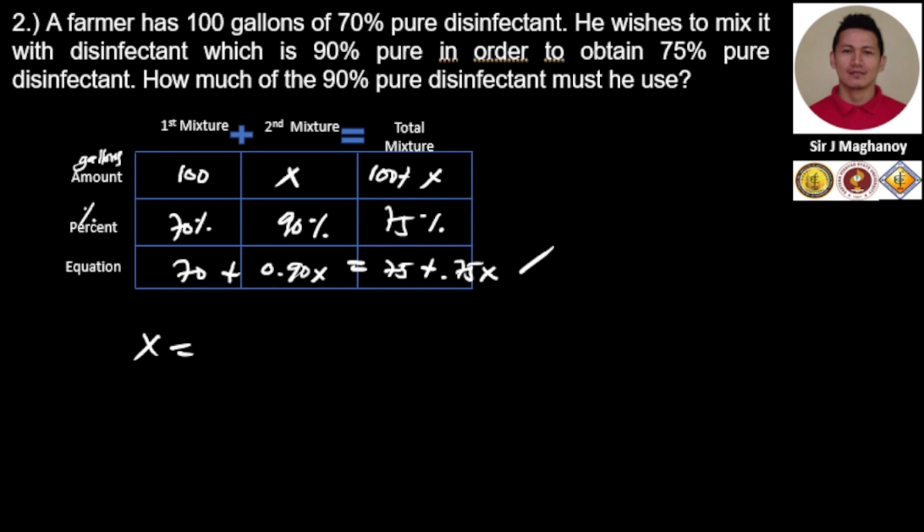So the answer is 33.333, or simply 33 and one-third gallons.